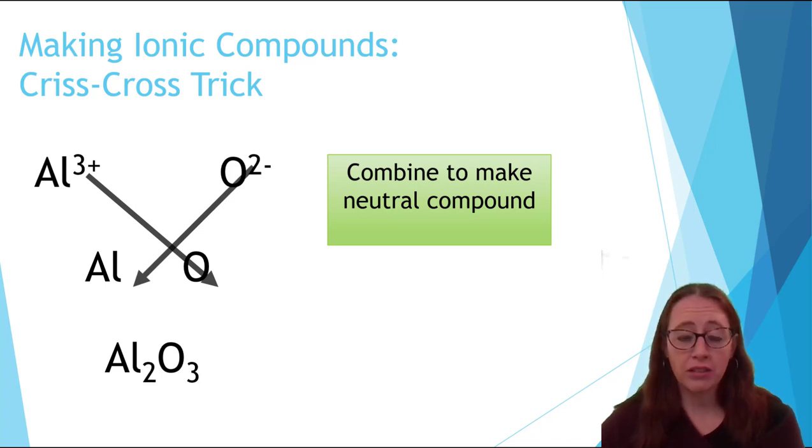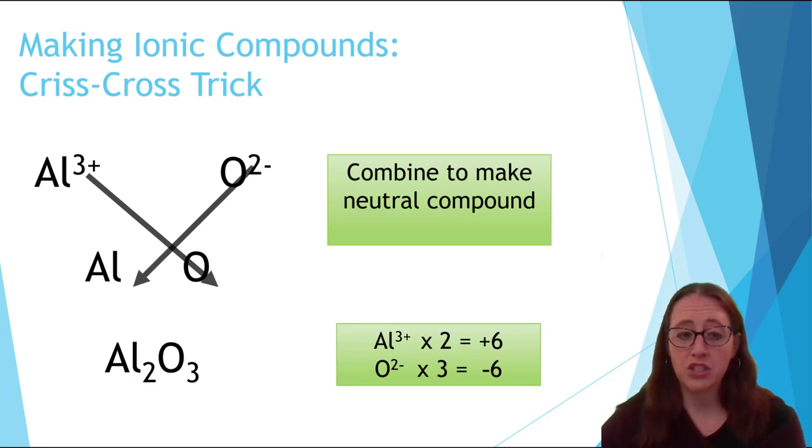We need this overall compound to be neutral. So we can go ahead and calculate and show that this is what happens. We have two aluminums, which gets a plus six, and three oxygens, which is a minus two each giving us a negative six, and plus six plus minus six equals zero. So overall we have a neutral compound.